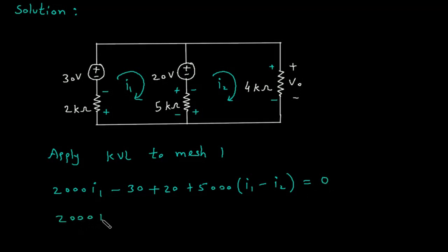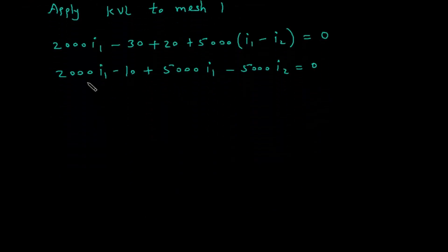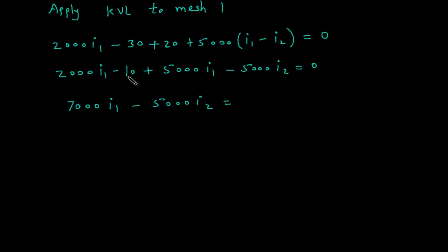Simplifying: 2000 × I1, and minus 30 plus 20 gives minus 10. Moving minus 10 to the right side gives plus 10. This is equation number 1.